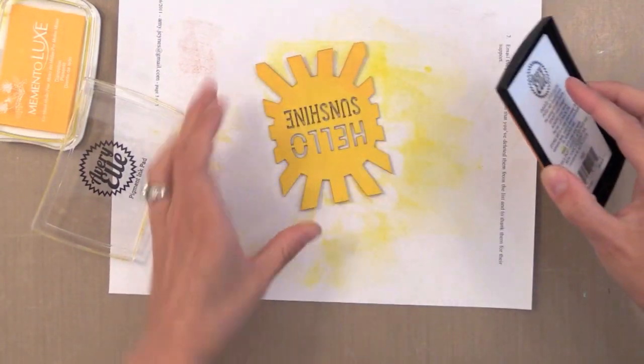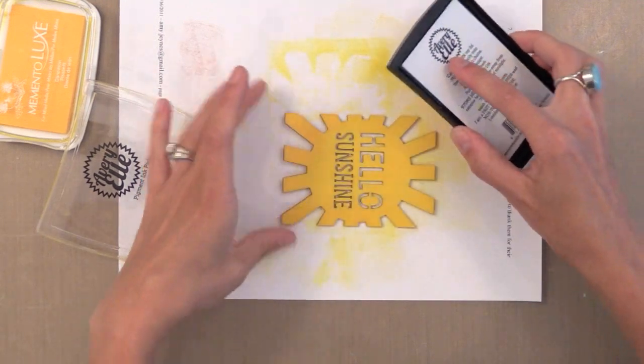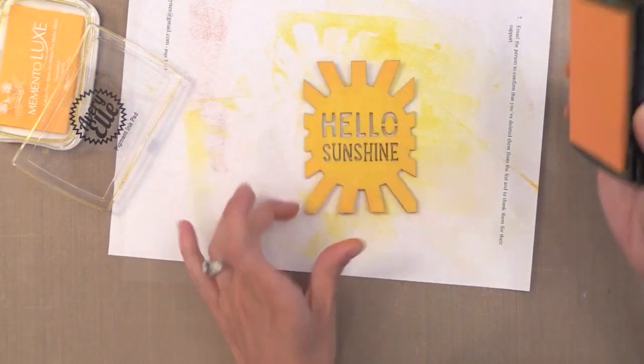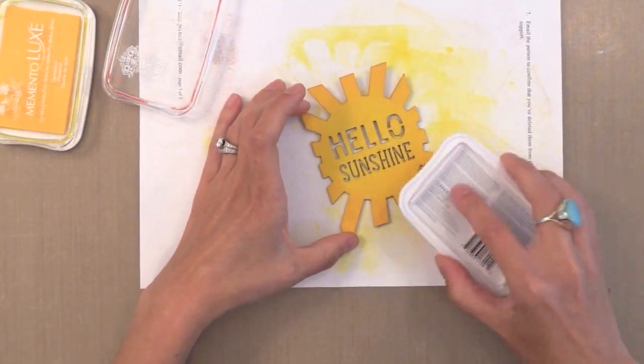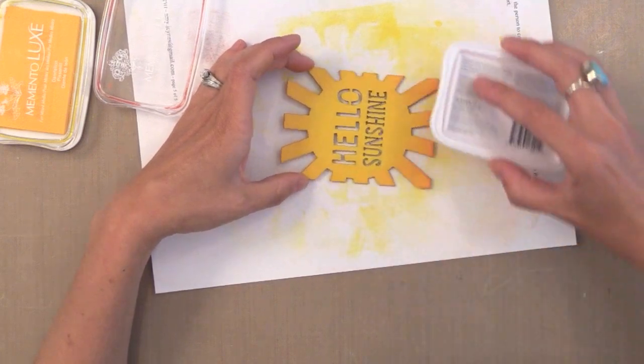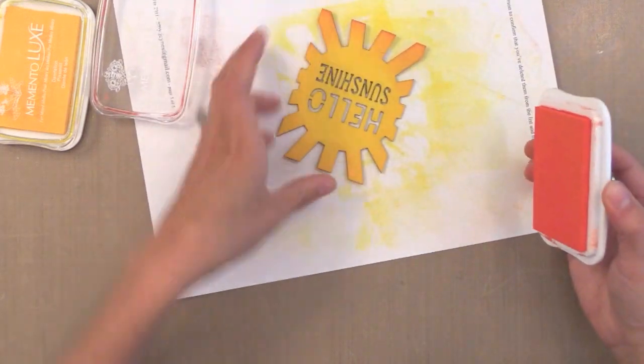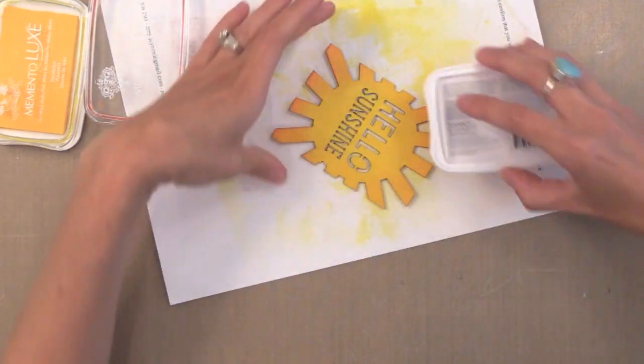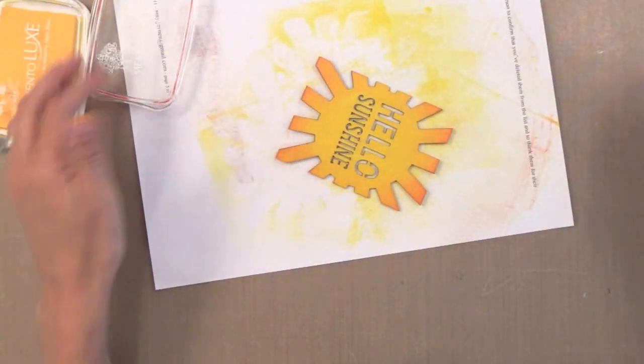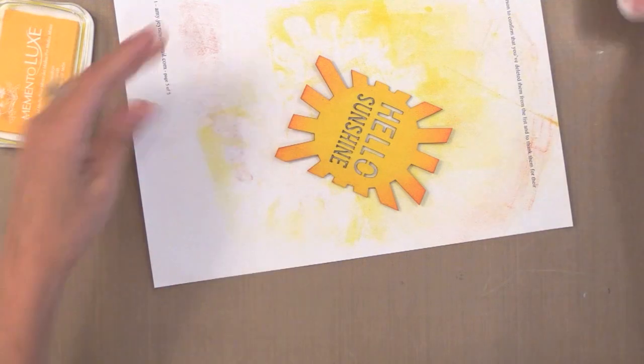I'm going to go ahead and add some of that orange around the edges and also some of the darker orange too, just to give it a little bit of interest. Now this is going to be wet. As before, I put it through the letterpress and I transferred that ink onto the paper, but instead this ink is going to sit on top of this wood veneer. So we want to do something to kind of trap it in there. So I'm going to take embossing powder and put it on top.